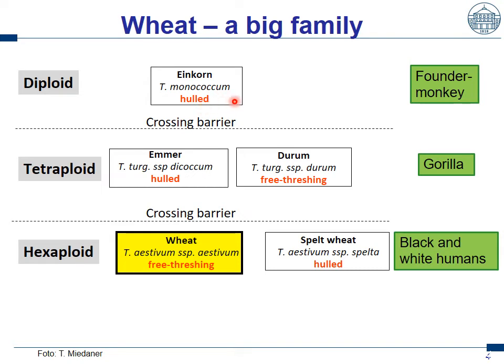And einkorn is even more far away from bread wheat. If we assume wheat as humans once again, einkorn would be something like a founder monkey, also quite distant from a gorilla. That's really a big genetic difference. Einkorn cannot be crossed with emmer, not with wheat, and not with spelt. It has very different genetics, but all in the same big family of wheat.